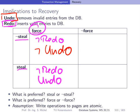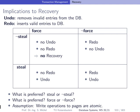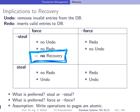We can fill in the full matrix. In particular, the upper-left box — force and no steal — means we need neither redo nor undo, so we don't need to consider crash recovery at all. This looks preferable, and one might say: let's just configure force and no steal and skip recovery programming altogether. Well, it's not that simple.